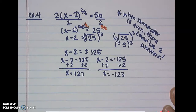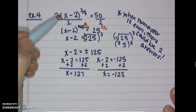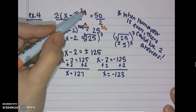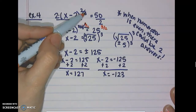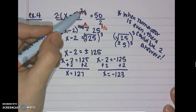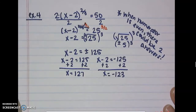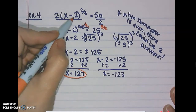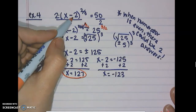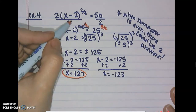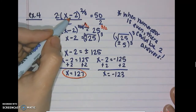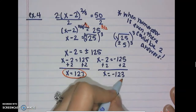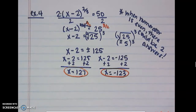Checking x = 127: 127 minus 2 is 125, the cube root of 125 is 5, 5 squared is 25, times 2 gives 50. Checking x = -123: negative 123 minus 2 is negative 125, the cube root of a negative is negative, so we get negative 5, negative 5 squared is positive 25, times 2 gives 50. Both answers work.